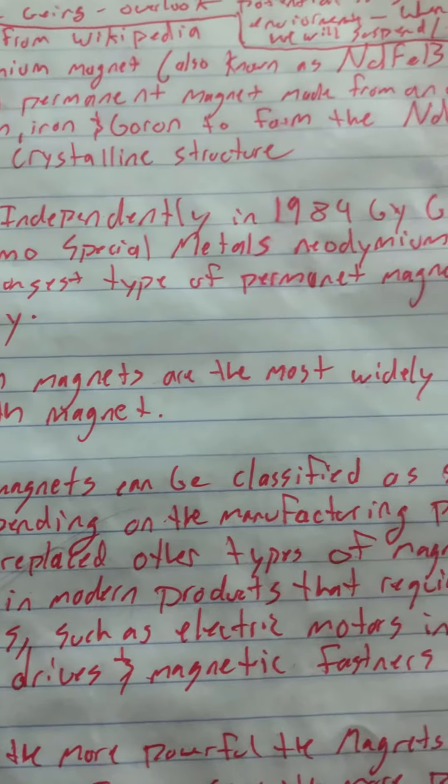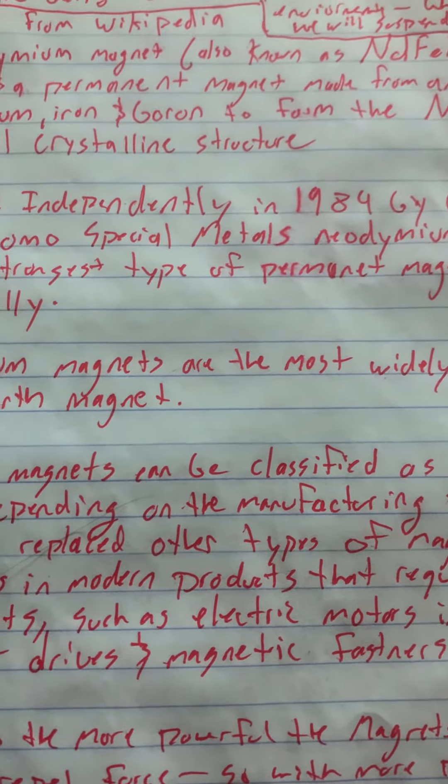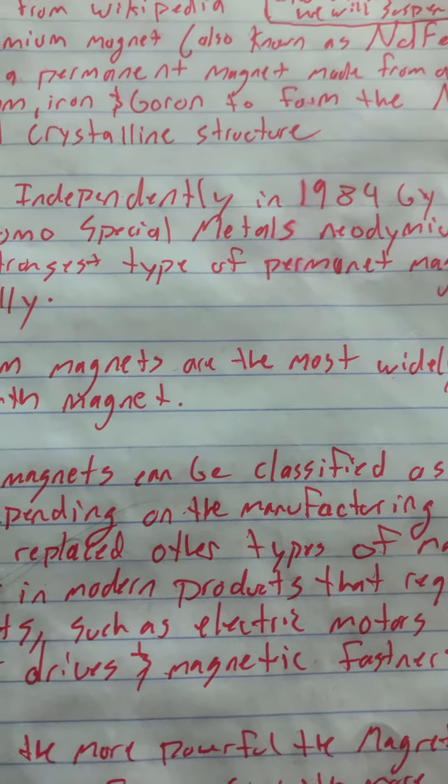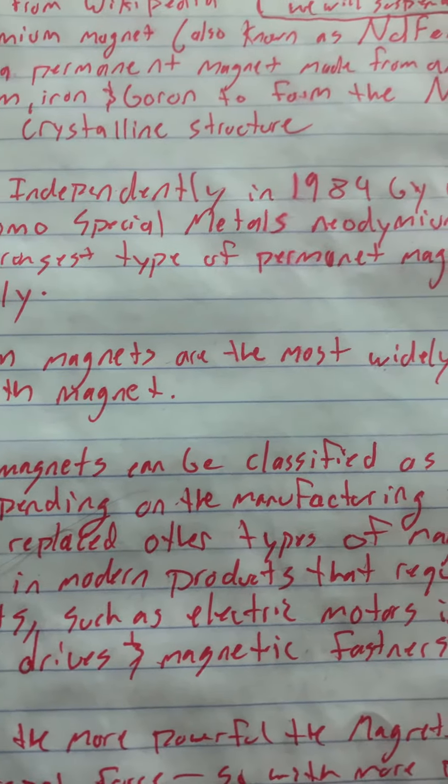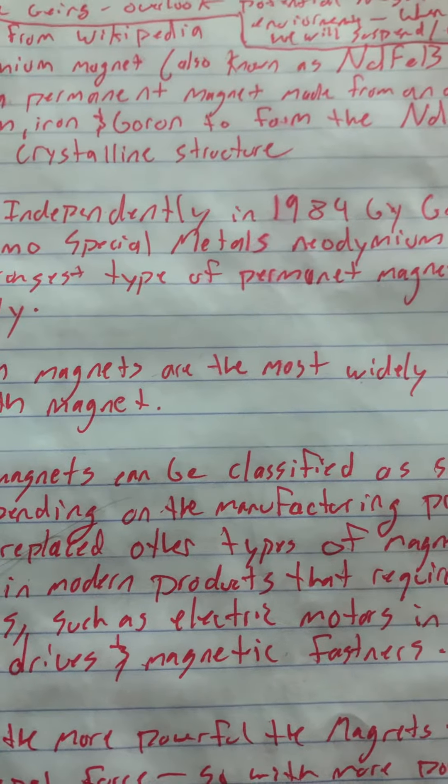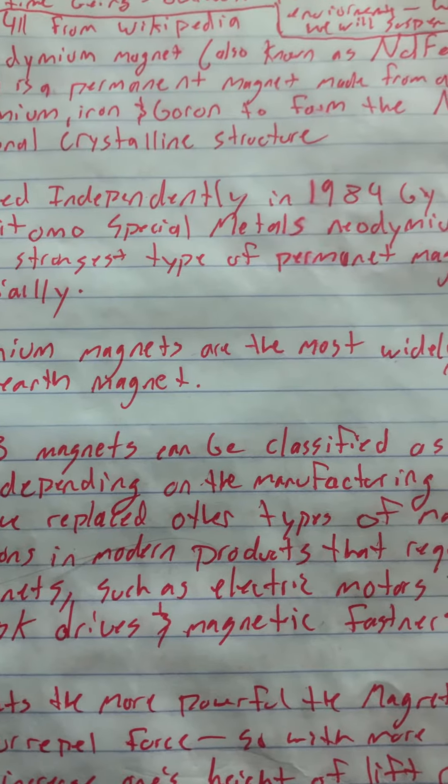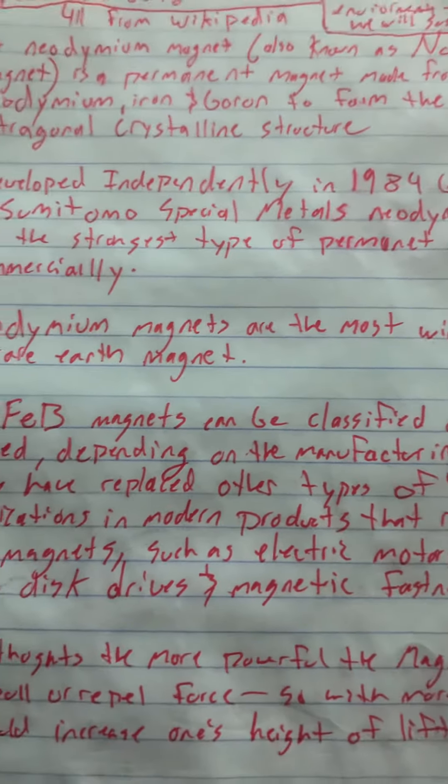Developed independently in 1984 by General Motors and Sumitomo Special Metals, neodymium magnets are the strongest type of permanent magnet available commercially.